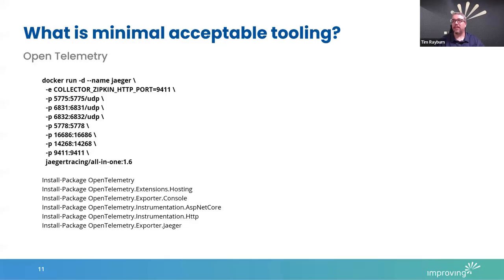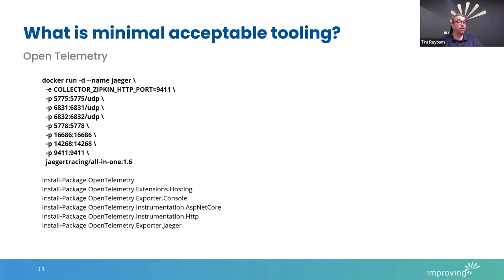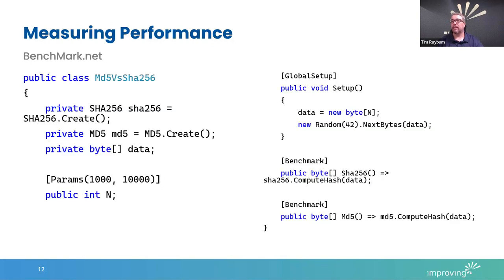That gives us a good look at the minimal acceptable tooling: structured logging, health checks, and OpenTelemetry. If you're doing these three things, you're prepared for when there is a problem. You can identify where you have problems, and over time observe that an endpoint has been getting slower and slower as the data behind it grows. We have the tools to look at a live running system and actually measure what is going on.